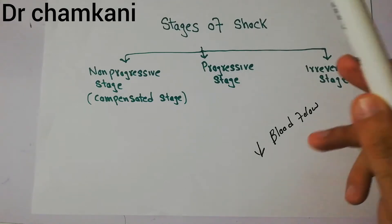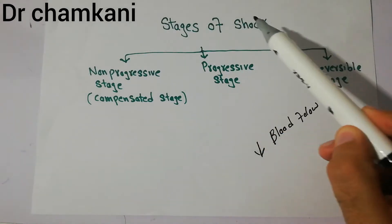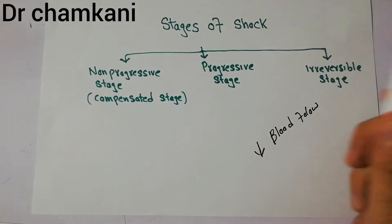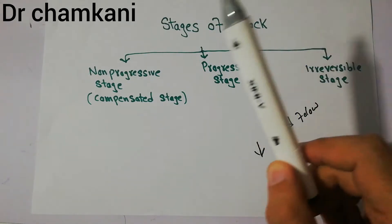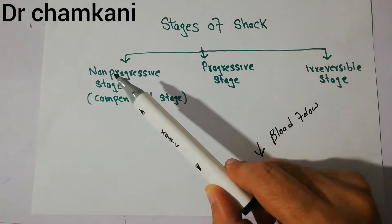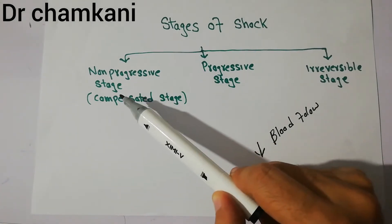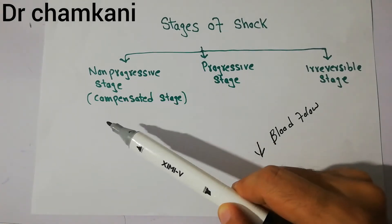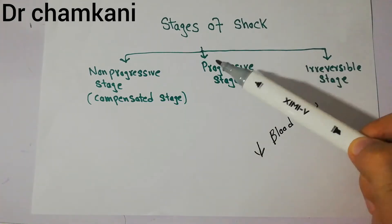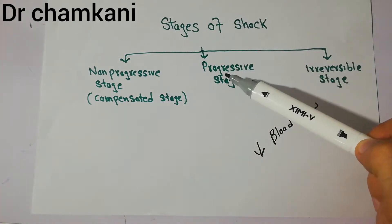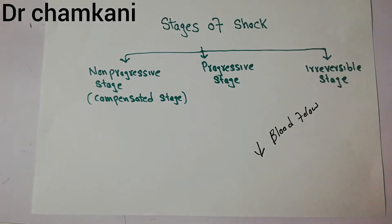Today in this lecture we are going to discuss different stages of shock. The three main important stages of shock are: first, the non-progressive stage or the compensated stage; second, the progressive stage; and finally, the irreversible stage.